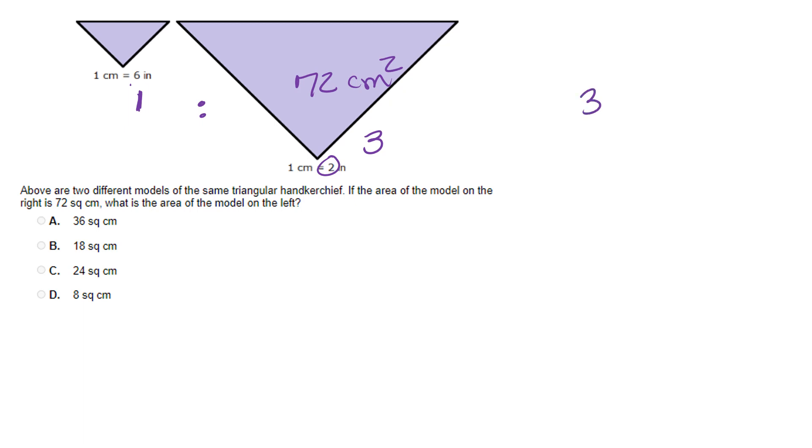So I'm going to take my area and divide it by 3 squared, which is the same as 9. 72 divided by 9 does give me 8. So my area on the left is going to be 8 square centimeters.